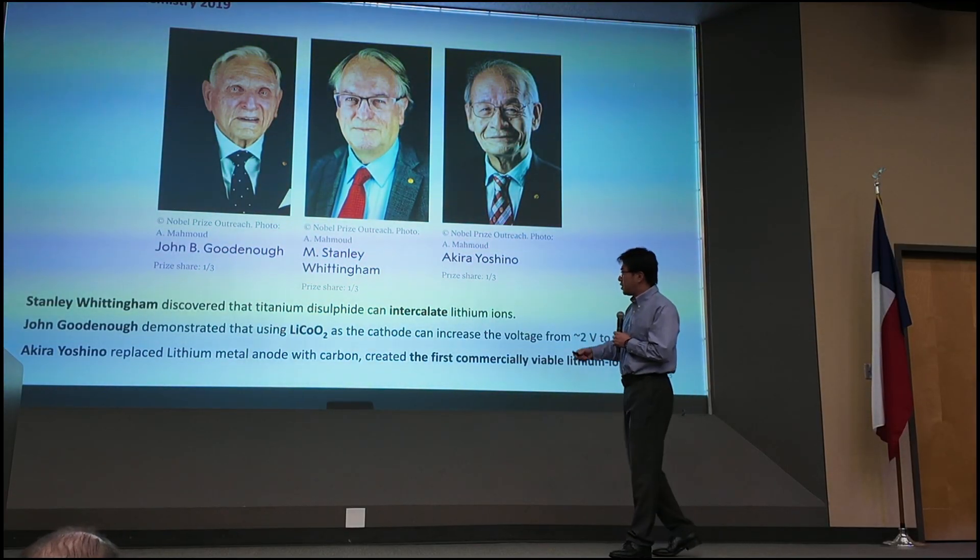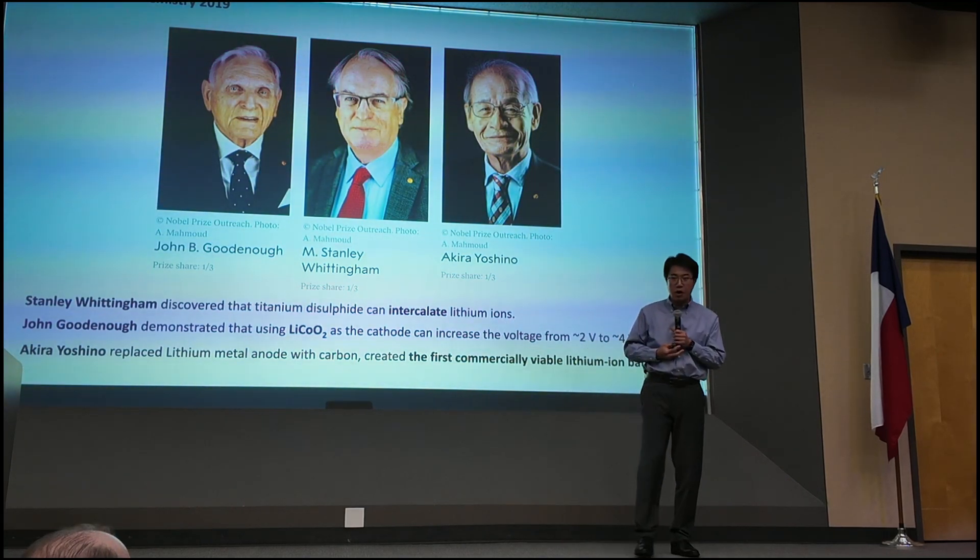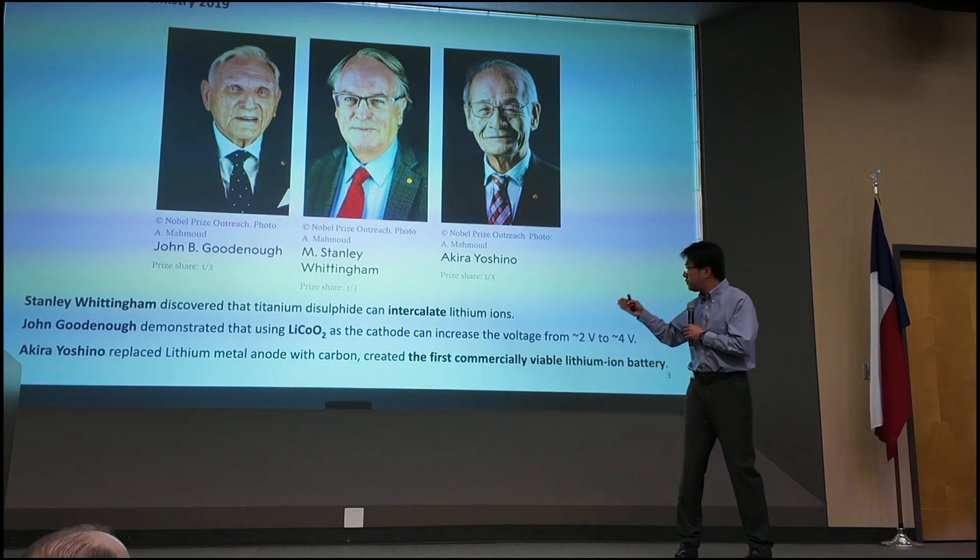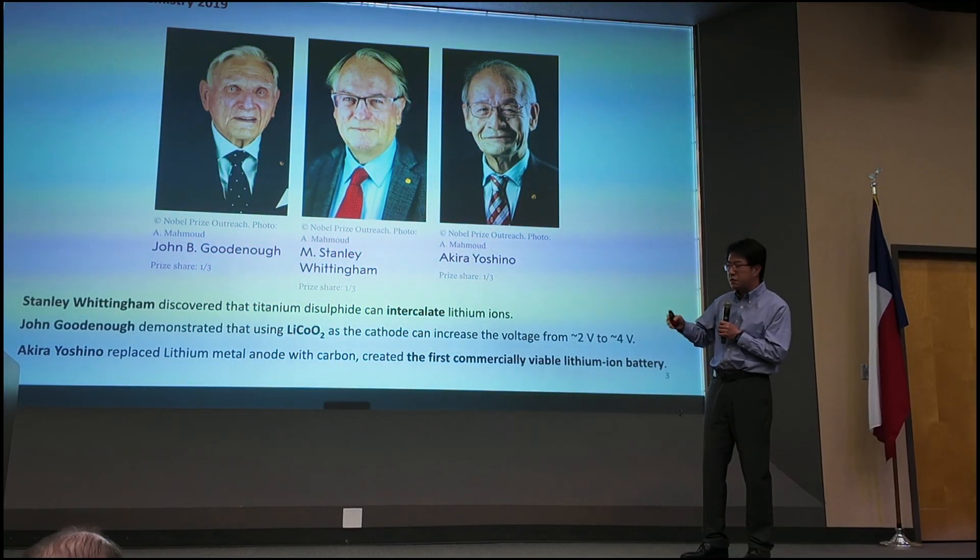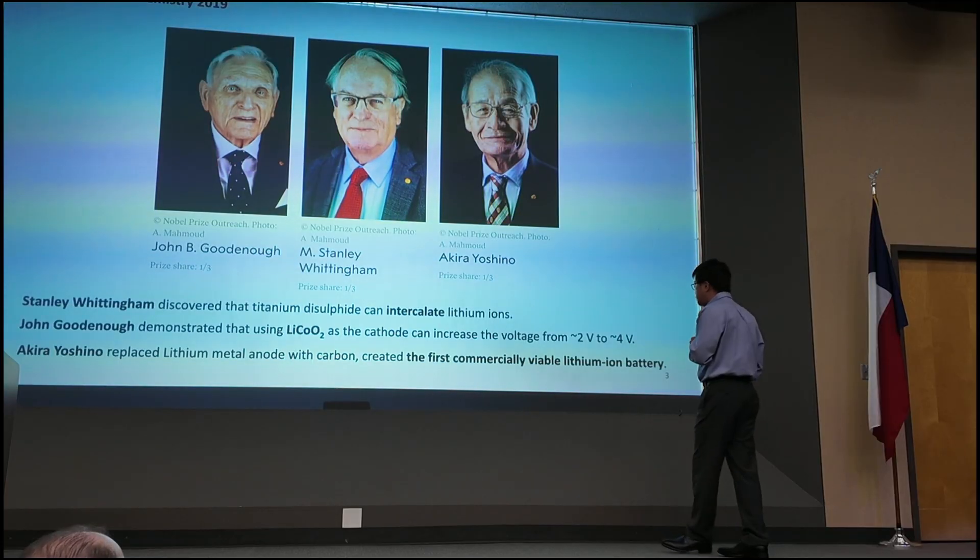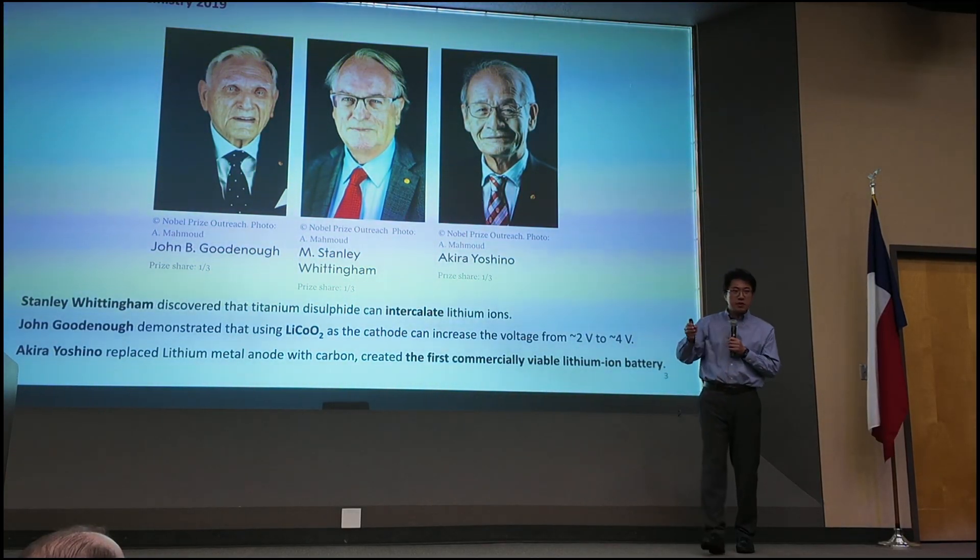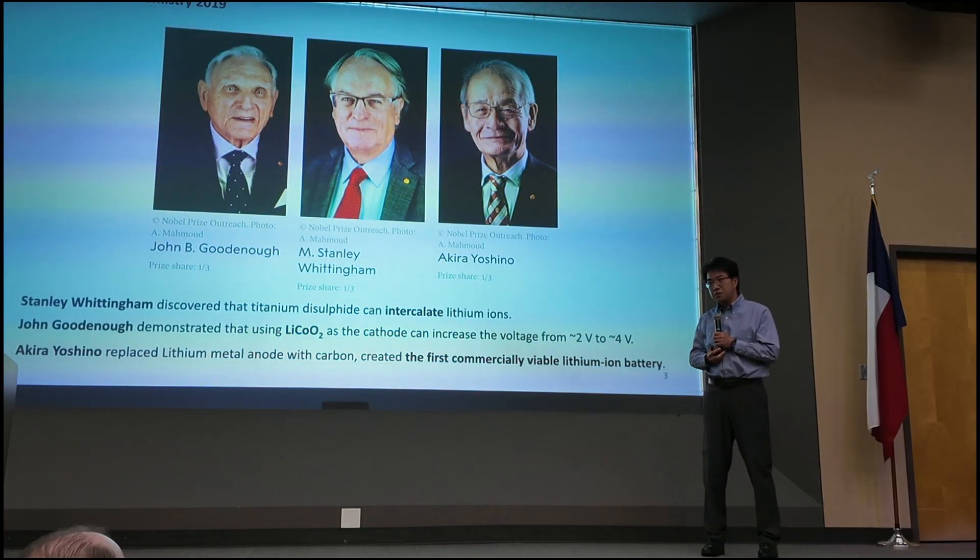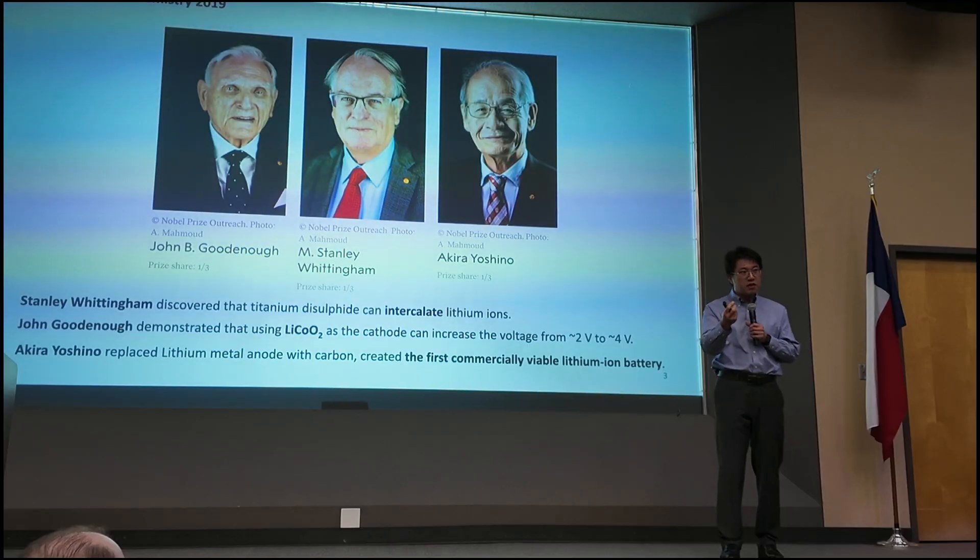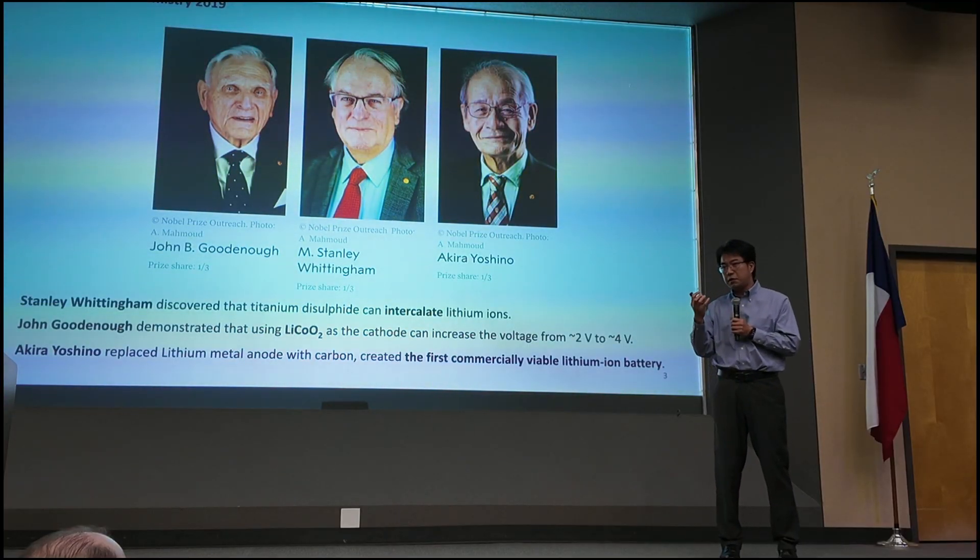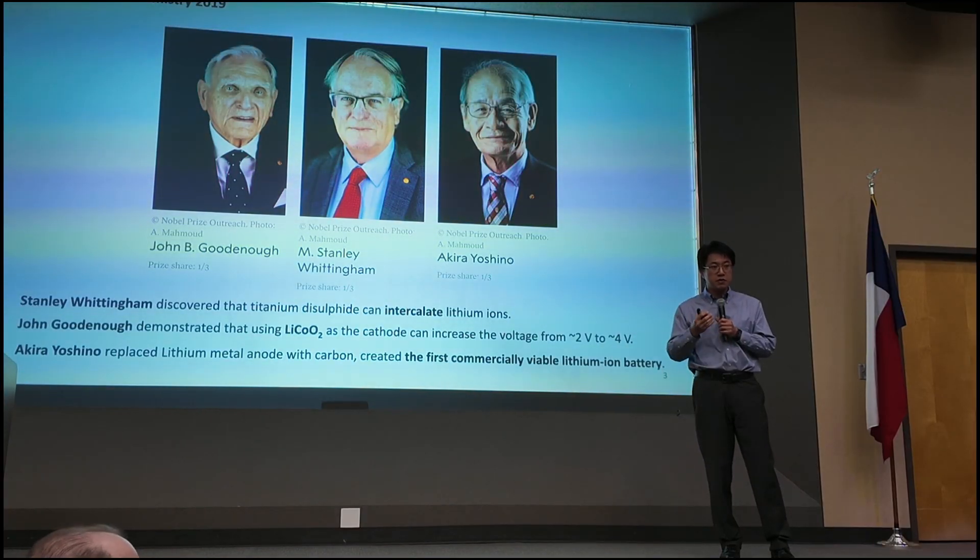John, from UT Austin, he was working on solid metal oxide materials. And what he found out is that utilizing lithium cobalt oxide as a cathode material can improve the voltage from 2 volt to 4 volt. That dramatically increases the energy density so that your cell phone is no longer bulky. You can utilize a small device to store a sufficient amount of energy to serve the purpose of energy storage with good efficiency.